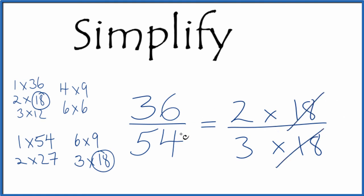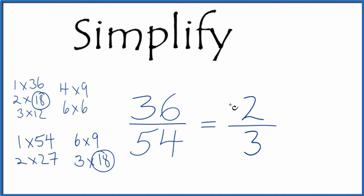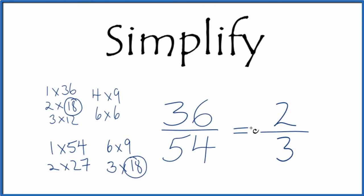We're left with 36 over 54 simplified down to 2/3. We can't reduce this any further. We've successfully reduced 36/54 down to 2/3, and these are equivalent fractions.